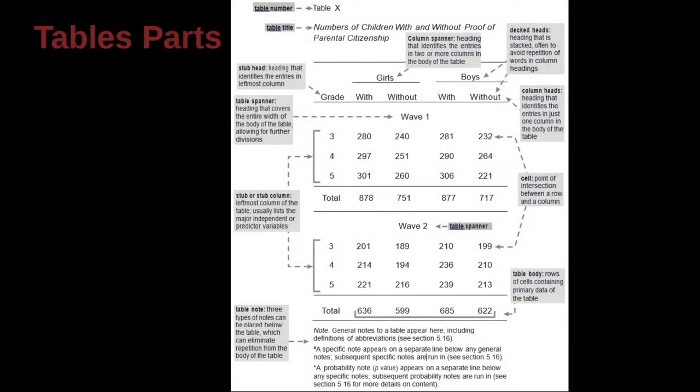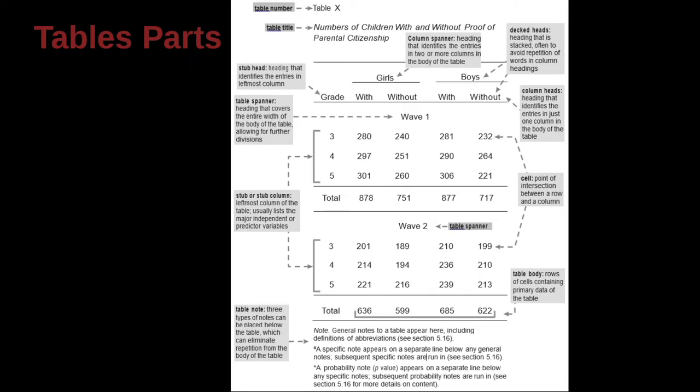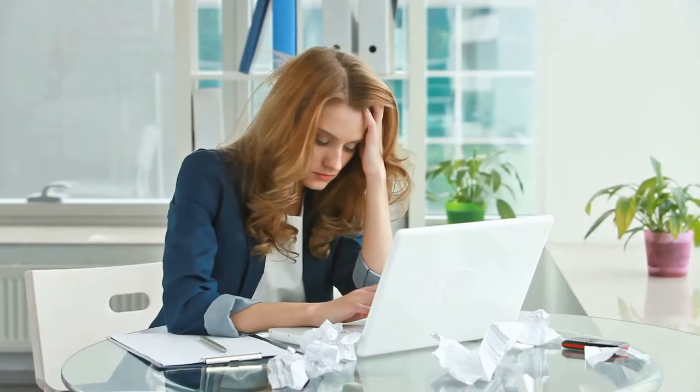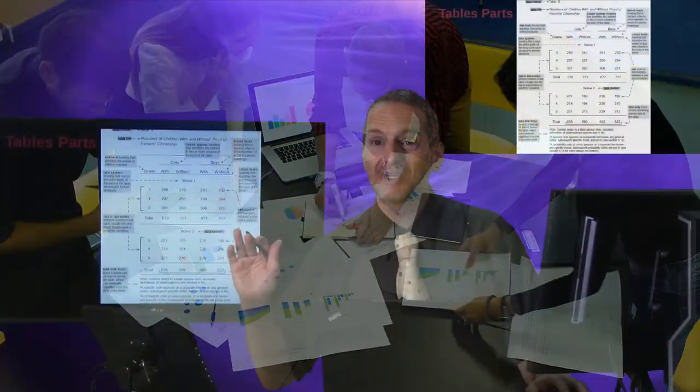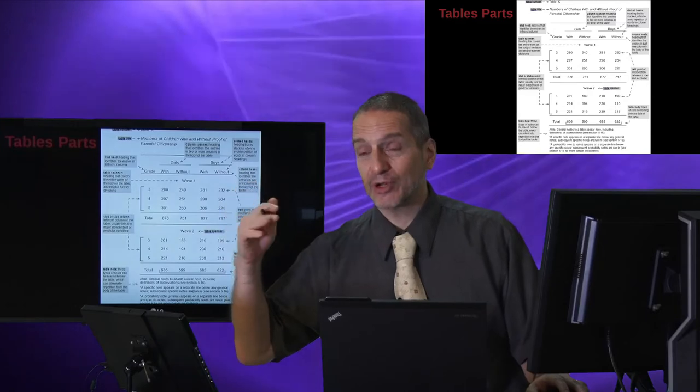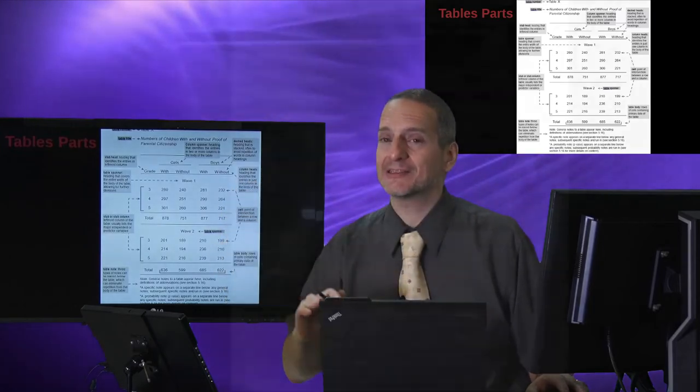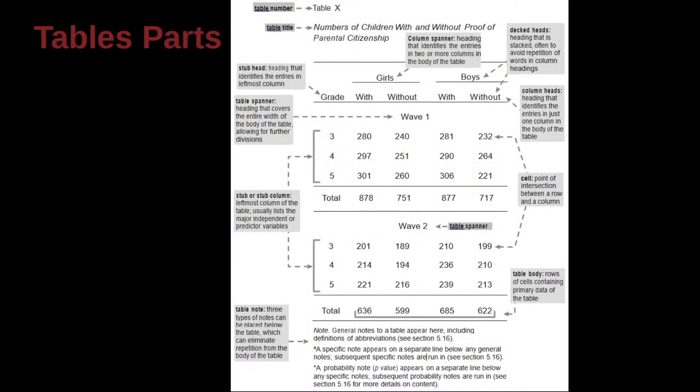Let's jump into the parts of a table. Now here we have the APA guidelines for what a table looks like, and all I can say is this has got to be the most complicated table I've seen because it includes all the possibilities of what you can do in a table. I'm sure there's more combinations, but here are the basic pieces to a table. So look at it with me over here.